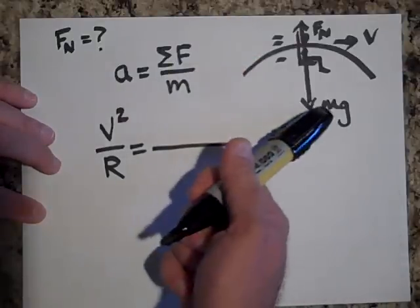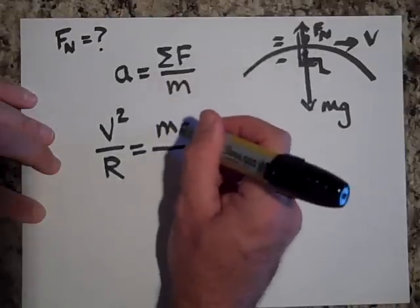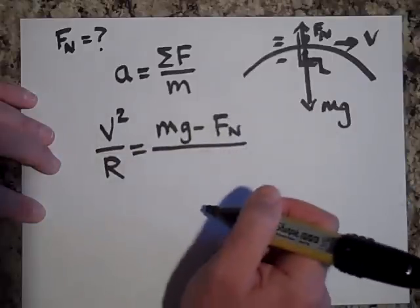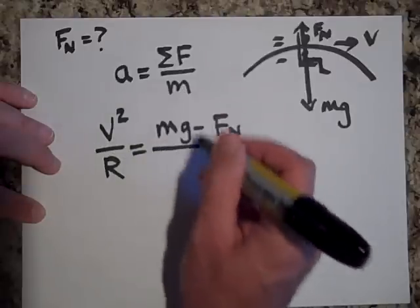I would say since this one is winning, it's accelerating downward. It's Mg minus the normal force. All over. That's a equals F net all over m.